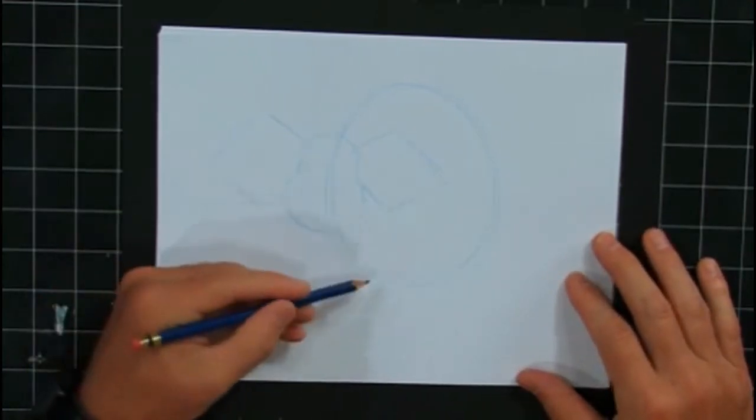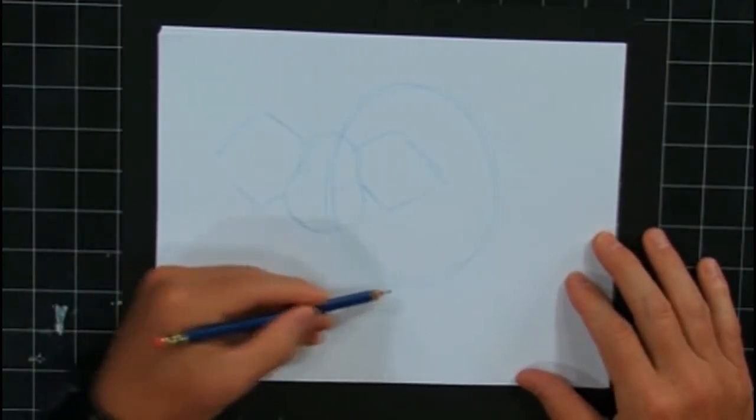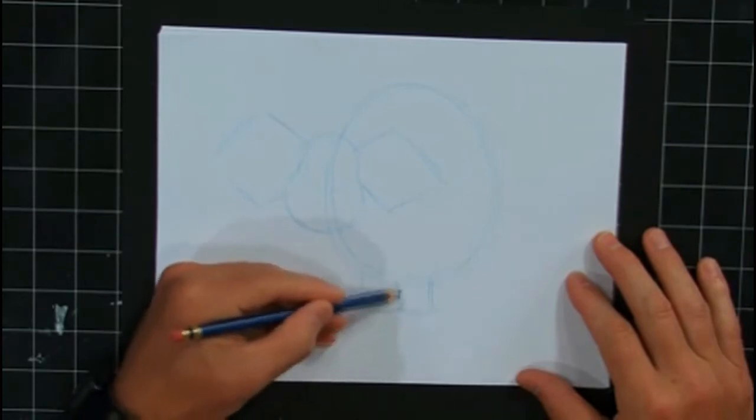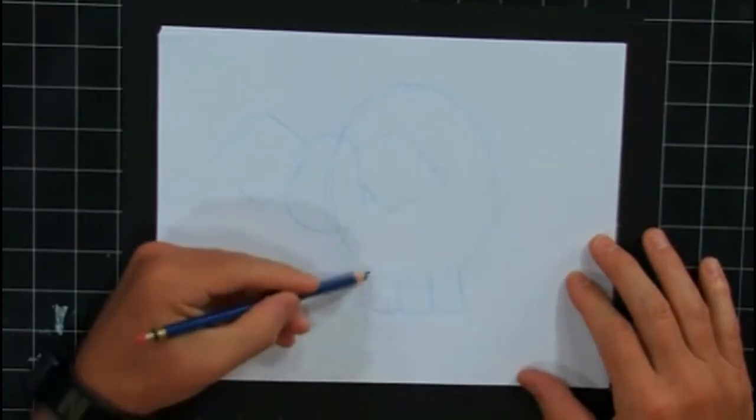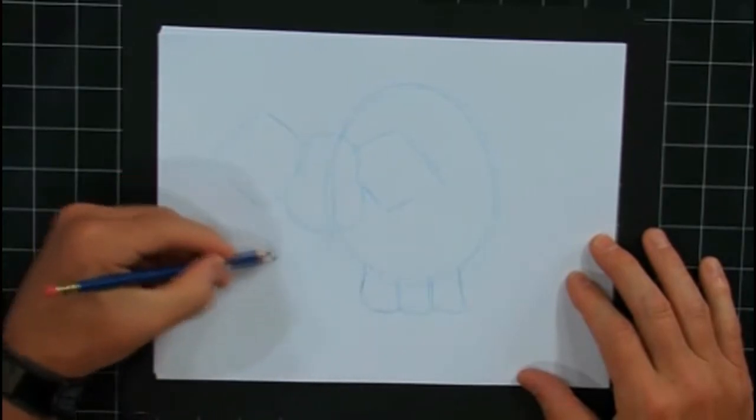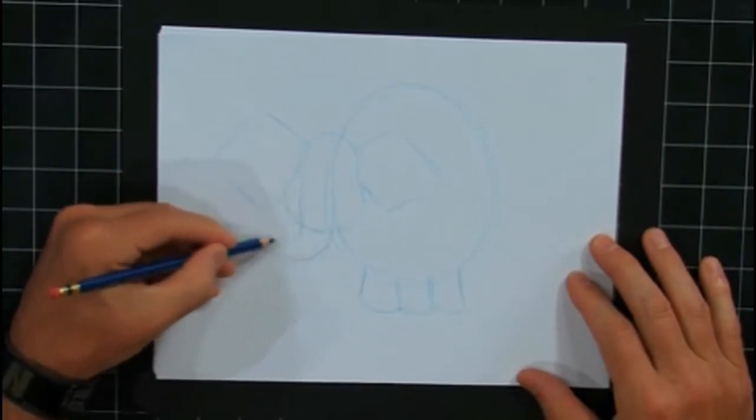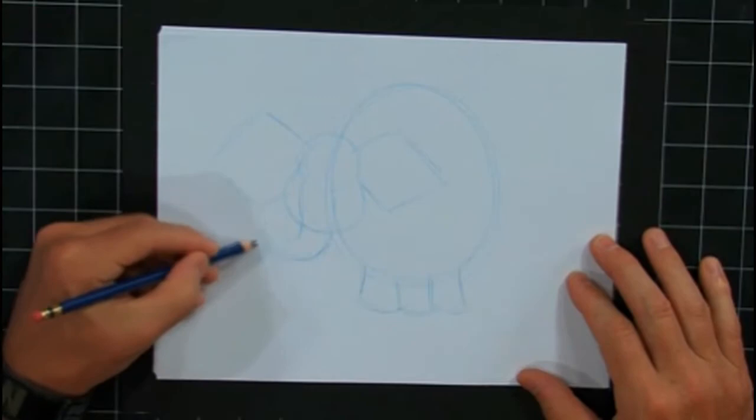And now for his legs, we're going to do the cylinders. We're only going to do three since we can't see his back leg. The other one's hidden. And then here's his trunk. So now that we have him basically broken down into shapes, he's going to be a lot easier for us to draw.